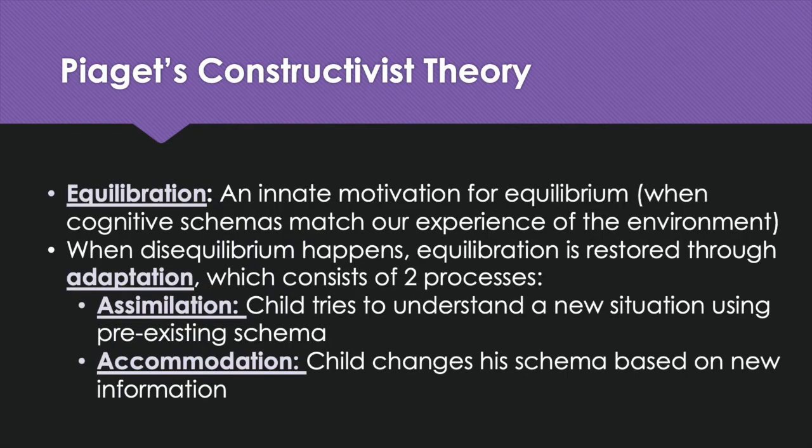Piaget argued that cognitive development was the result of equilibration, which is an innate motivation for equilibrium. Equilibrium happens when cognitive schemas match our experience of the world. When our cognitive schemas don't match, we're in a state of disequilibrium. Equilibration is restored through adaptation, which consists of two processes.